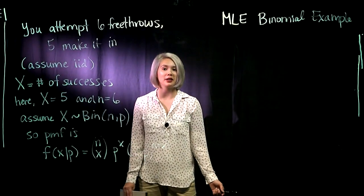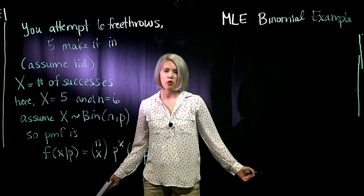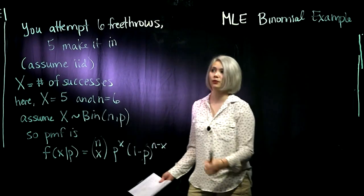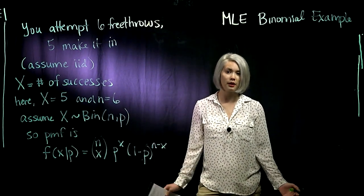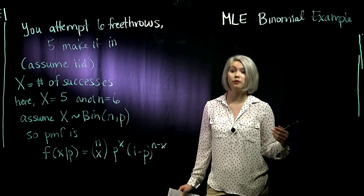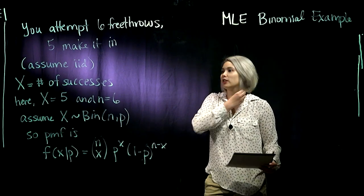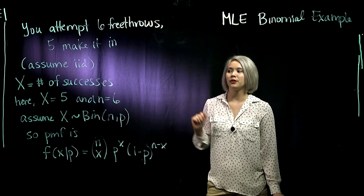Let's practice maximum likelihood by looking at an example using the binomial distribution. Assume you're playing basketball, you attempt six free throws and five of them make it in. Let's also assume that each free throw has an equal chance of getting in and your free throws are independent. In other words, we're assuming that we have a random sample of size six, five of them make it in.